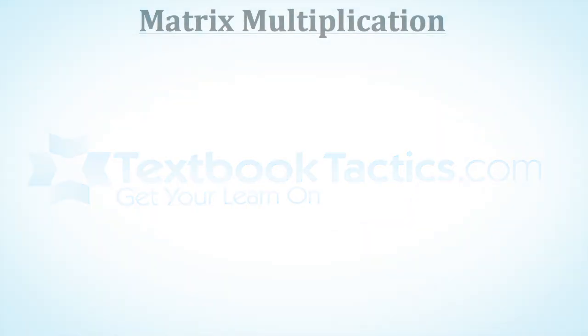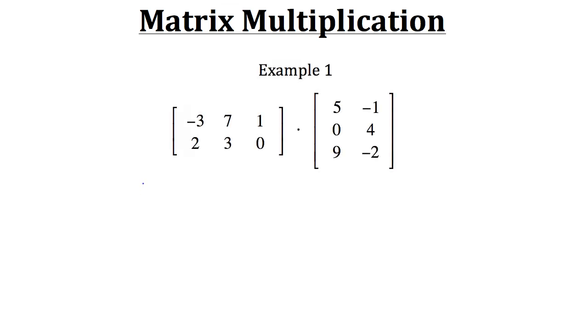This is a tutorial on matrix multiplication. The concepts involved here aren't quite as simple as matrix addition or subtraction. A critical point to keep in mind before you actually start multiplying matrices is to first check to see that the number of columns in the first matrix equals the number of rows in the second matrix, because in order to do matrix multiplication the columns in the first matrix have to be the exact same number as the rows in the second matrix.